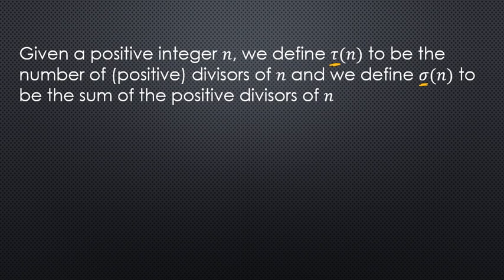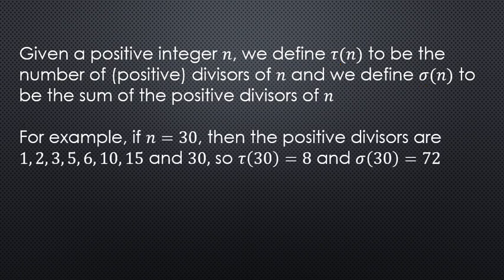Now, for small values of n, we can just list out all of the positive divisors or positive factors, and we can just count how many there are, and we could add them up and get our sum.